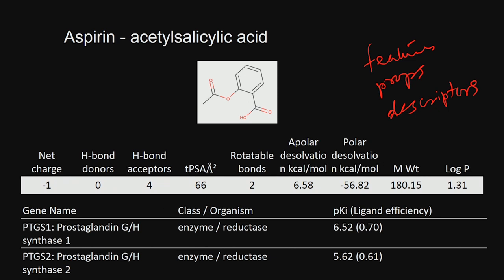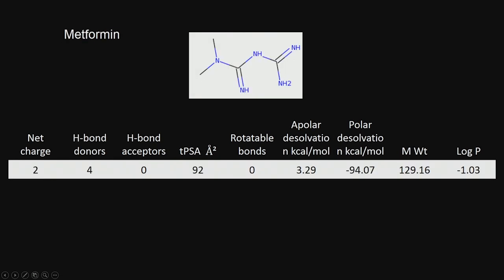Molecular weight is one easy property which you all know about. Aspirin has got 2 rotatable bonds. Now let us look at another one — metformin. Everybody nowadays knows about metformin because diabetes has become a serious problem globally, including in India, and it is a widely used drug for controlling diabetes.